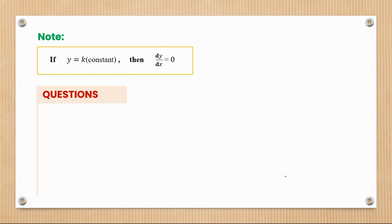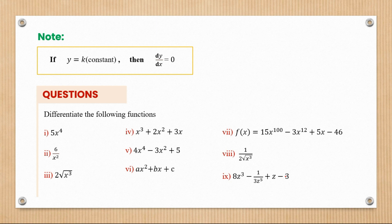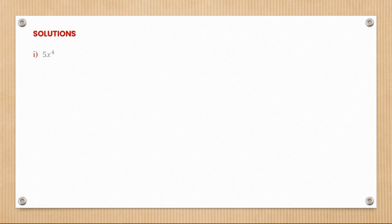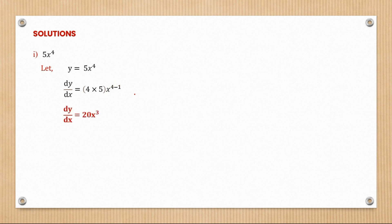Let's look at some questions to help us understand this better. We're asked to differentiate the following nine expressions. The first one is 5x to the power four. We let y equal 5x to the power four, so dy/dx equals four times five, which gives us 20x cubed. We multiply the index by the coefficient and subtract one from the index.